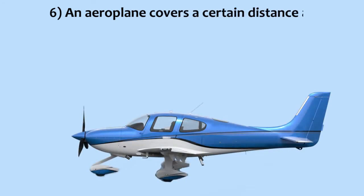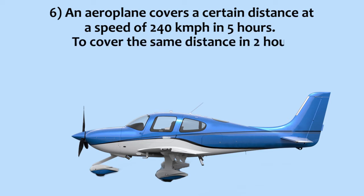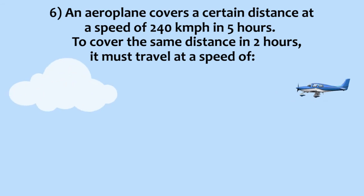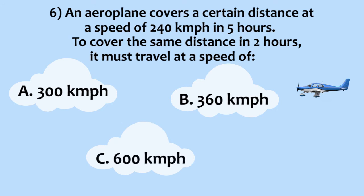An aeroplane covers a certain distance at a speed of 240 kilometers per hour in 5 hours. To cover the same distance in 2 hours, it must travel at a speed of 300 kilometers per hour, 360 kilometers per hour, 600 kilometers per hour, 720 kilometers per hour.